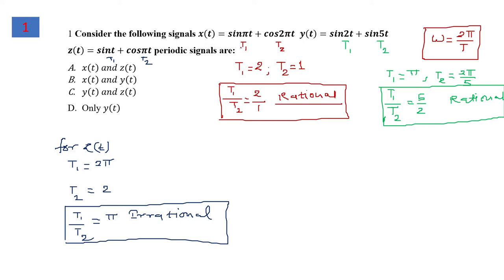For signal x(t), the T1 value is 2 seconds and T2 is 1 second. These values are obtained using the relation omega equals 2π/T. Taking the ratio T1/T2, it comes out to 2/1, which is a rational number.